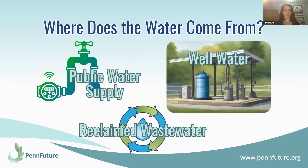So where is the water coming from for these systems? This depends on where the data center is located. If there's a public water supply available, a data center will most likely connect to that. If not, they can use well water, or in some cases reclaimed wastewater — the effluent that comes from a wastewater treatment plant. Sewage is treated and the resulting effluent, while not drinkable, is suitable for cooling purposes, so some data centers use reclaimed wastewater from wastewater treatment plants.